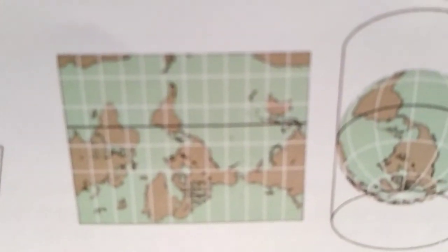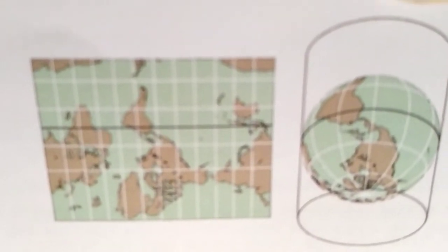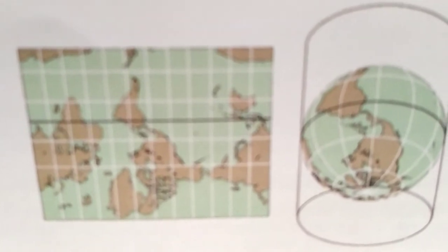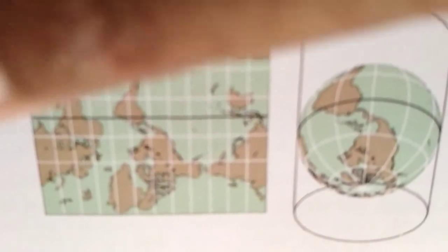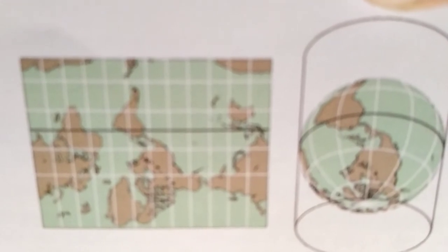The azimuthal projections are also called plane or zenithal projections. To create these, the map maker designates one point of the globe as the center of the map. The point can be anywhere. The projection is imaged as if a flat piece of stiff paper were resting there.